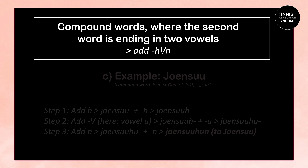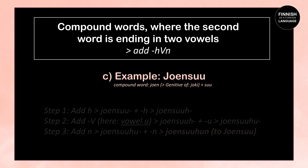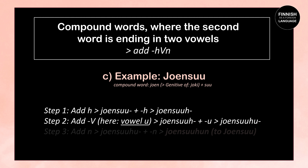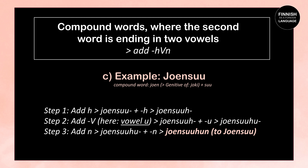With compound words where the second word ends in two vowels — for example Joensuu — we add H: Joensuu + H = Joensuh. Then we add the vowel U: Joensuh + U = Joensuhu. Then we add N: Joensuhu + N = Joensuuhun, meaning to Joensuu. When we have a compound word, we focus on the second word when adding the illative ending.